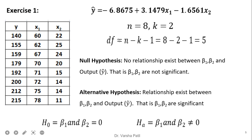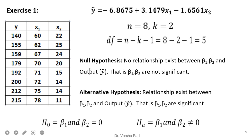Beta 1 and beta 2 are the slope values associated with the two independent variables. In the alternative hypothesis, we state that beta 1 and beta 2 are significant and they are contributing significantly in the regression process.